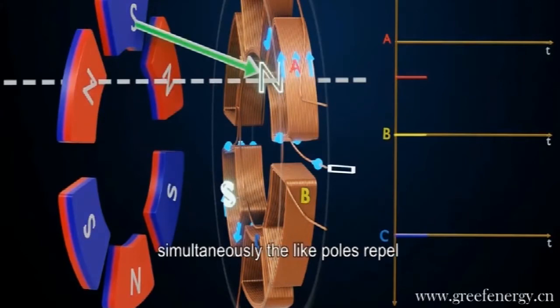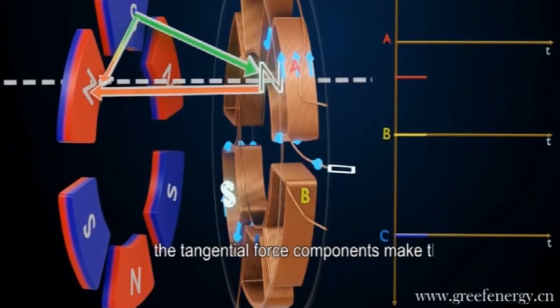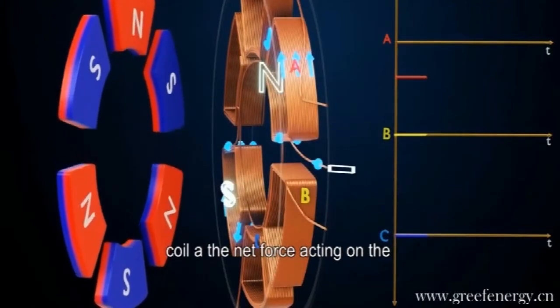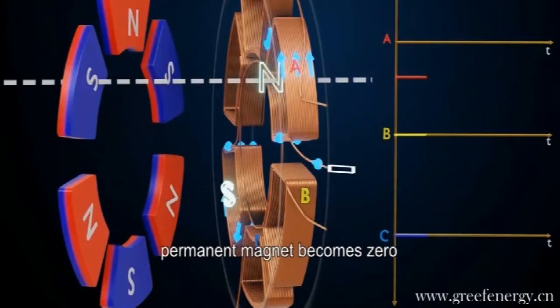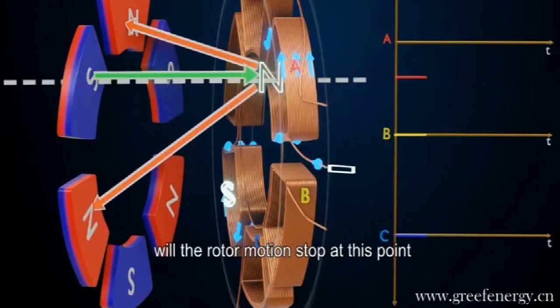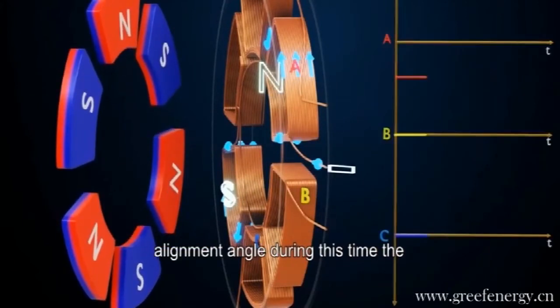Simultaneously, the like-poles repel. The tangential component of these two forces is shown here. The tangential force components make the rotor rotate. When the rotor aligns with coil A, the net force acting on the permanent magnet becomes zero. Will the rotor motion stop at this point? The rotor's speed, or the inertia effect, causes it to travel ahead of the perfect alignment angle.